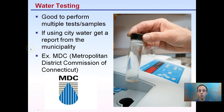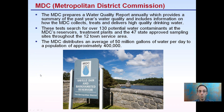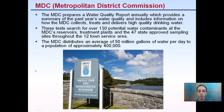If you're using city water, you can get a report from the municipality. The MDC — the Metropolitan District Commission of Connecticut — is one in the local area that's great at providing testing. They prepare water quality reports annually and provide summaries of the past year's water quality. They test 130 potential water contaminants across reservoirs, treatment plants, and 47 state-approved sampling sites throughout 12 town service areas, distributing an average of 50 million gallons of water per day to a population of about 400,000 in Connecticut. I've personally called them and was able to get a water sample report for samples pulled the previous day in my local area. Reach out to where you're getting your water from — they can provide reports that are not only annual, but sometimes very current. You can also test it yourself to ensure you have properties that constitute good water.